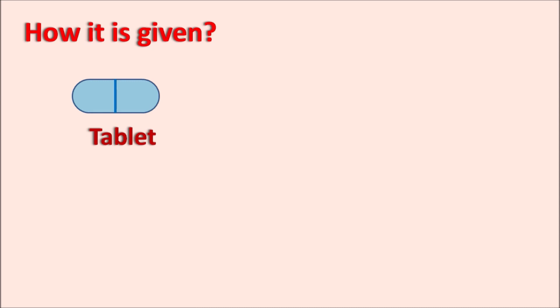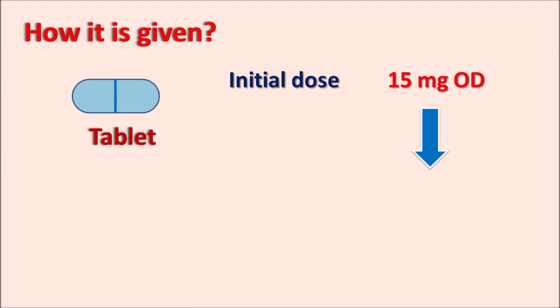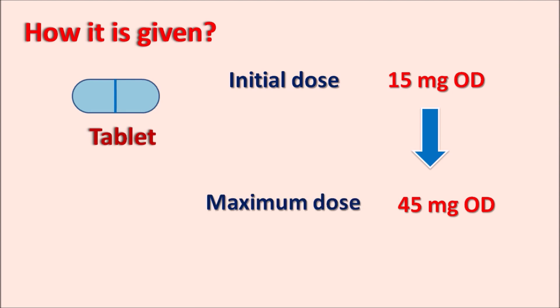How is it given? Mirtazapine is available as tablets at 15 mg and 30 mg. The initial dose is 15 mg once daily and can be gradually increased up to 45 mg once daily, which is the maximum dose. The dose increment should be done after a few weeks of treatment in order to assess the antidepressant activity.